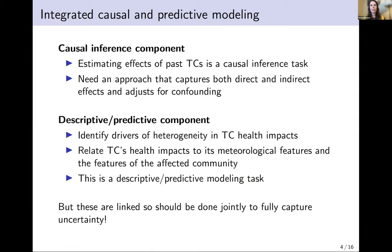Methodologically, we've been developing what we call causal predictive machine learning models — big models containing both a causal inference and a predictive component. Our first aim — estimating health impacts of past tropical cyclones at high resolution — is a causal inference task requiring adjustment for possible confounding and capturing both direct and indirect TC health effects. The second two aims involve relating a tropical cyclone's health impact to its meteorological features or features of affected communities — more of a descriptive or predictive modeling task. We formally link these two components so that final results have uncertainty measures reflecting uncertainty from both pieces.